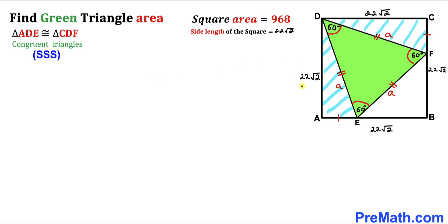Therefore triangle ADE is congruent to triangle CDF by the side-side-side congruency theorem. So we conclude that the corresponding angles are congruent. Since the whole corner angle is 90 degrees and the triangle's angle is 60 degrees, the remaining angle has to be 15 degrees. Likewise the corresponding angle in the other triangle is also 15 degrees.